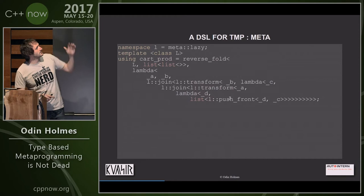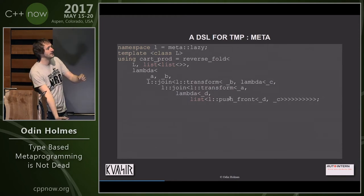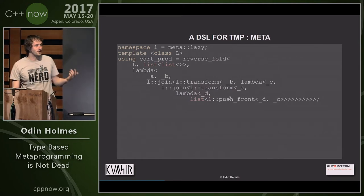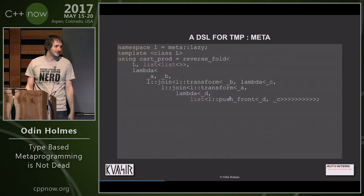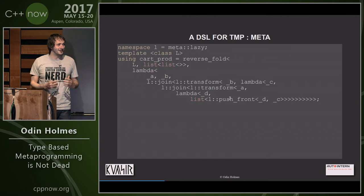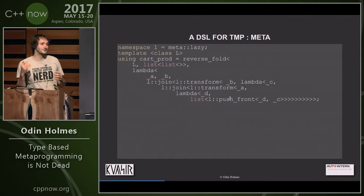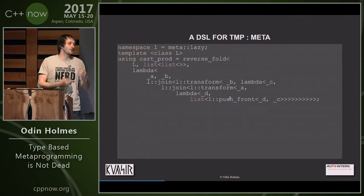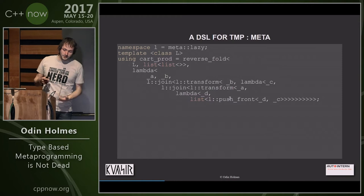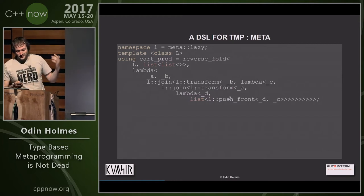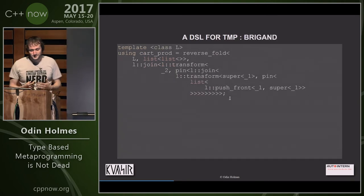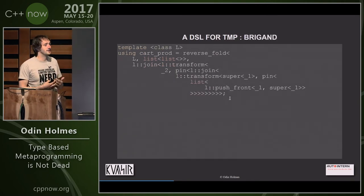So you can do things like Cartesian product all in higher-order meta functions. I thought, oh my god, that's cool — we could make a DSL for TMP. We could make higher-order meta functions so powerful and fast that that's the way you program TMP. You wouldn't have to have template disambiguators everywhere. You wouldn't have to have people know crazy syntax. They'd just have to learn this DSL. So this is what I built in Brigand, and it's actually been in there for about a year.